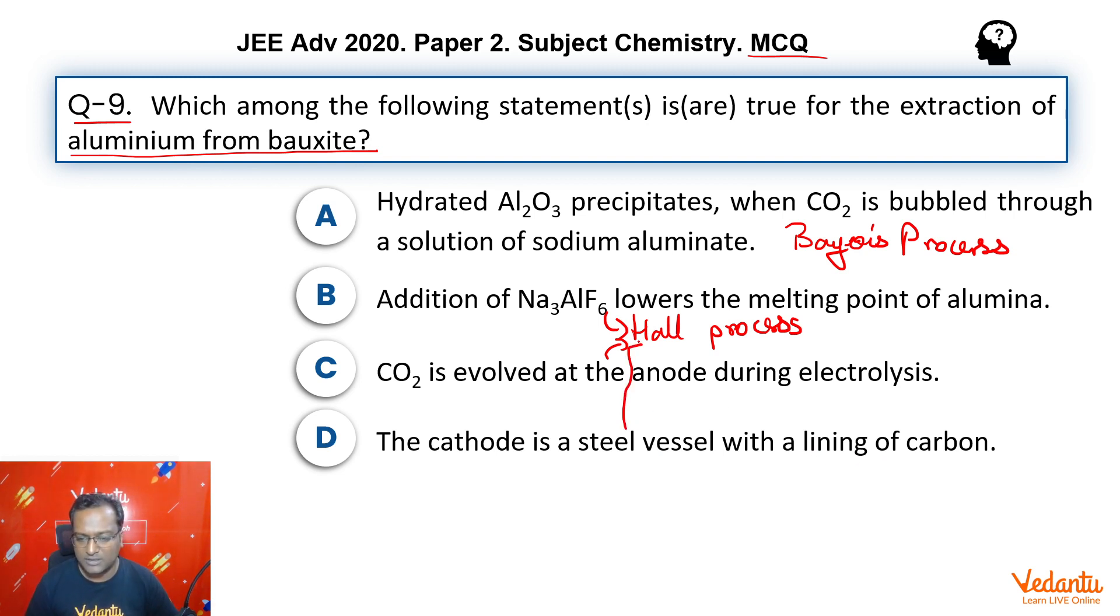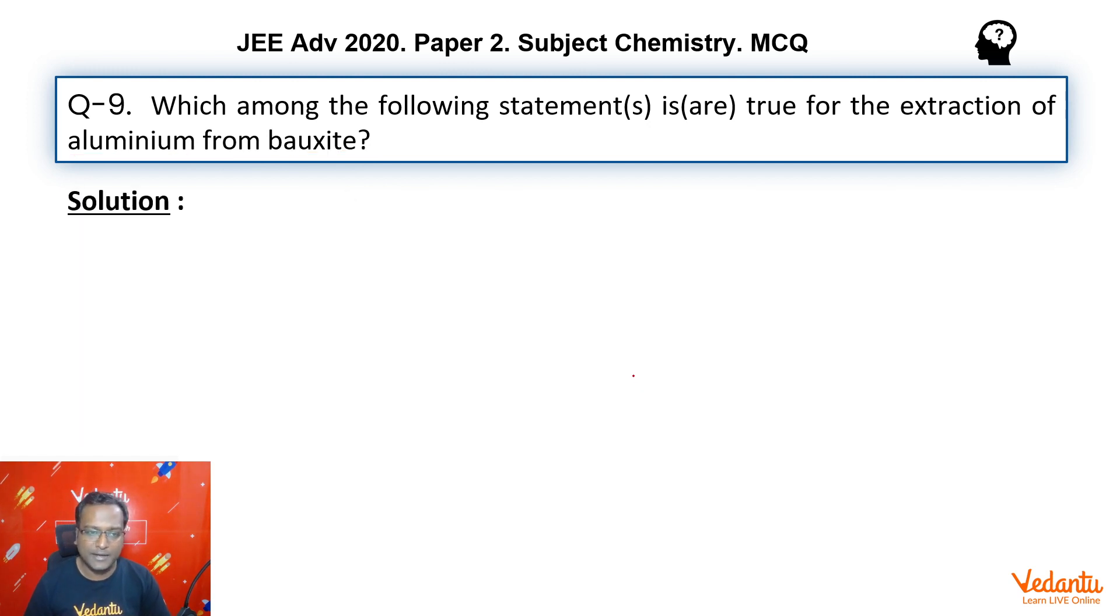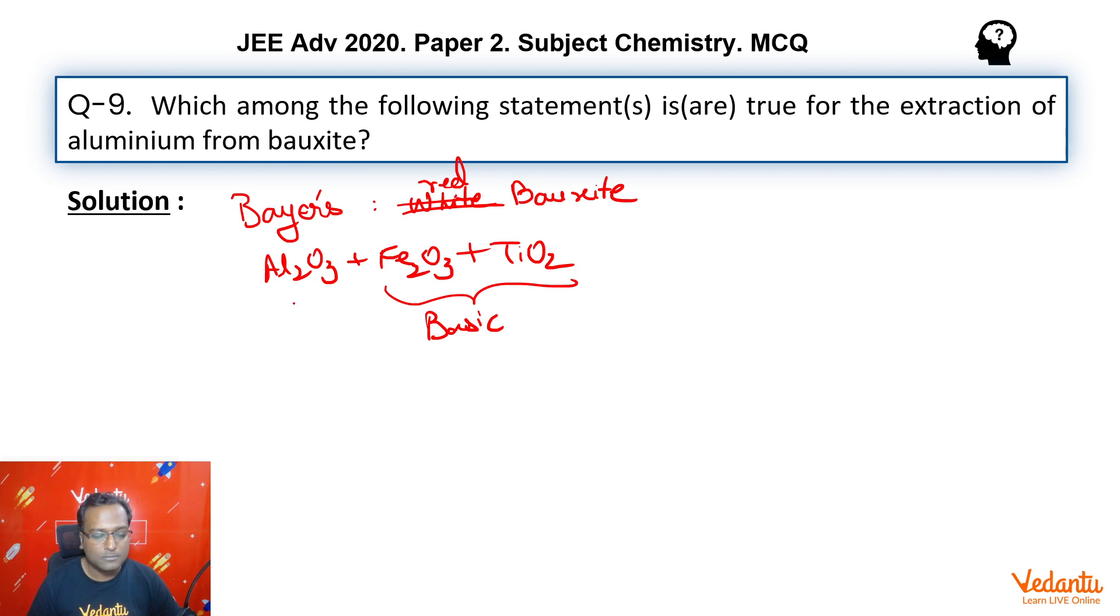Let's discuss these processes in slight detail. If we talk about Bayer's process, it is applicable to red bauxite. Red bauxite has Al₂O₃ with impurities of Fe₂O₃ and TiO₂. These are basic oxides and Al₂O₃ is an amphoteric oxide.